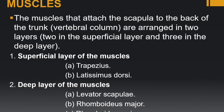Moving to the posterior axial appendicular muscles: the axial skeleton consists of the skull, ribs, and sternum, while the appendicular skeleton comprises the upper and lower limb bones. The muscles that attach the scapula to the back of the trunk are arranged in two layers. The superficial layer contains trapezius and latissimus dorsi. The deep layer contains levator scapulae, rhomboid major, and rhomboid minor. Let us now discuss each one by one.